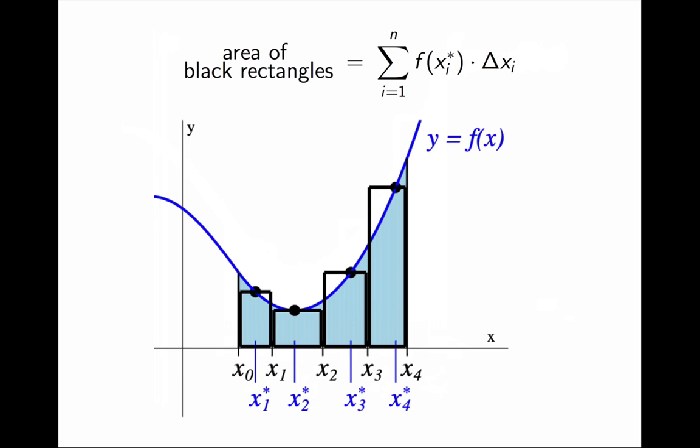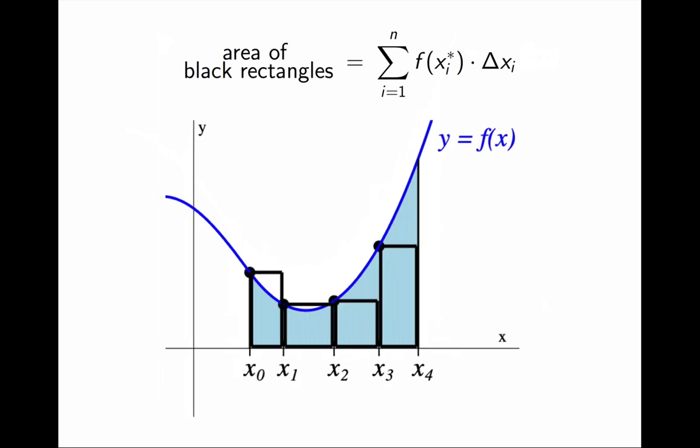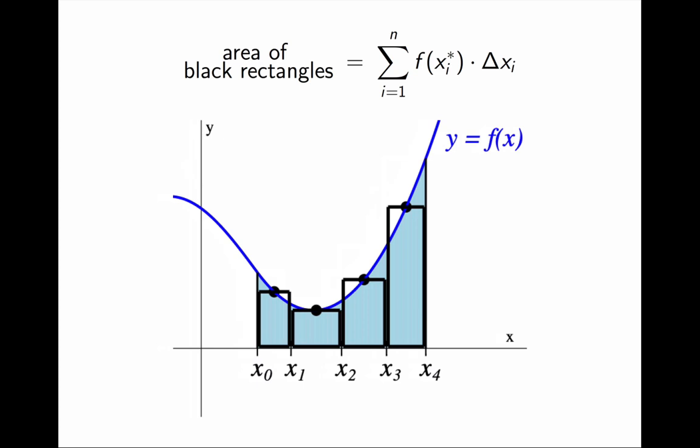Notice that I had many options for the points xᵢ*, and each one of them would give me different rectangles. I can make things simpler by always picking the left endpoint of each subinterval, or the right endpoint, or perhaps the midpoint, or anything else I want. Whatever choice I make, I will call this sum a Riemann sum.